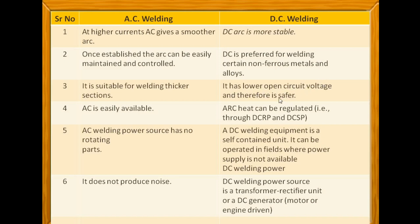In case of DC welding, it has a lower open circuit voltage and is therefore safer. AC is easily available in household applications. The arc can be regulated through DC — either with direct current reverse polarity (DCRP) or direct current straight polarity (DCSP). The choice of polarity depends upon how much penetration is required for the base metal.